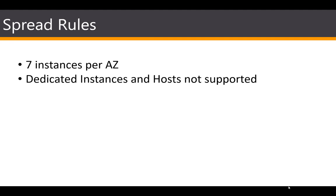For spread placement groups, there is a maximum of seven running instances per availability zone. For example, in a region with three availability zones, you can run a total of 21 instances in the group. Spread placement groups are not supported for dedicated instances or dedicated hosts, the same as partition placement groups.